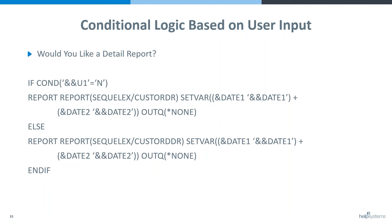Sometimes you need to do conditional logic based upon what your user keys in. I'm really excited about this example because we actually had a customer call in this week and they had their script practically created — the bow was on it and they were just missing a couple of quotes. It was using this exact same concept, so I'm very excited to share this because it does seem like a very useful tool to have in your toolbox.